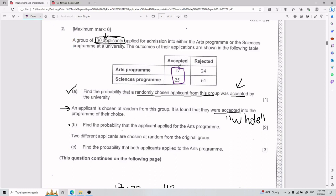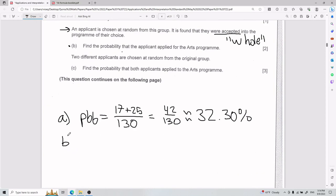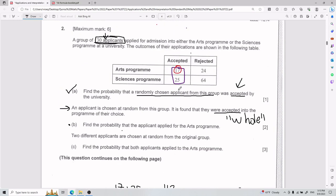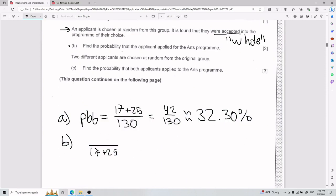It's the ones that were already accepted. So of those that were accepted, how many are in the arts program? So my whole is what I'm going to put now in purple. Of those that were accepted, how many were in the arts program? So keeping that in mind, of those that were accepted, we have 17 plus 25 divided by those that are in the arts program, which is just 17. So this is going to be 17 over 42, which is roughly 40.47%.